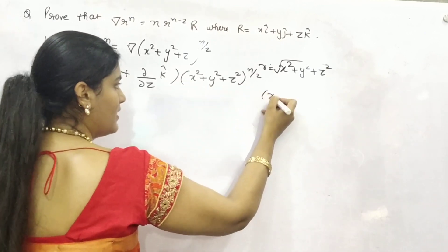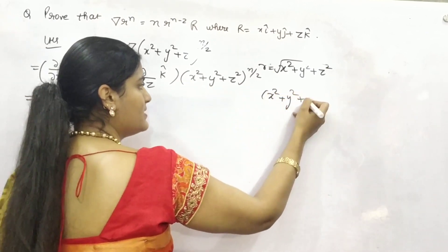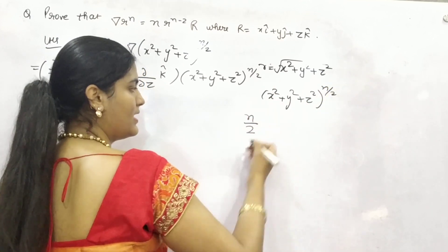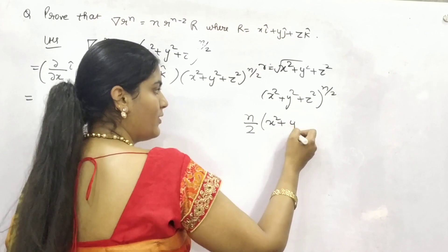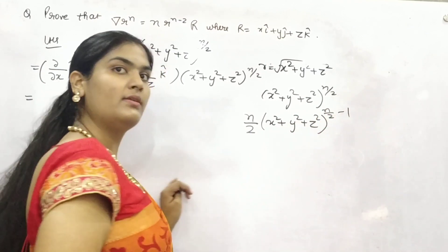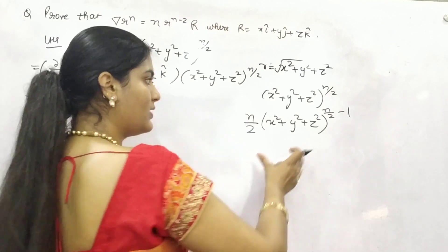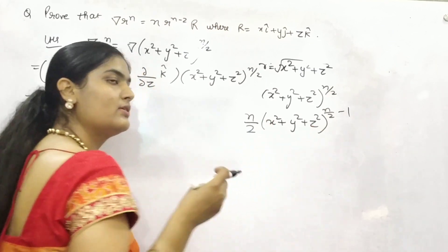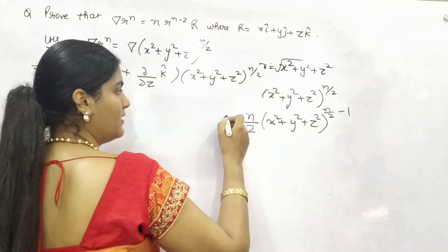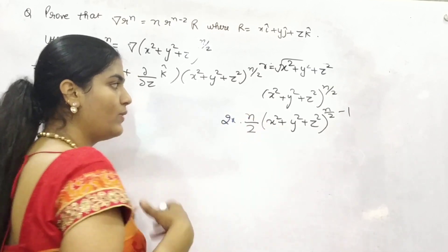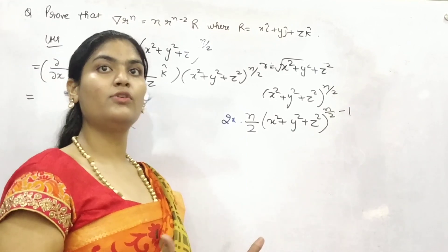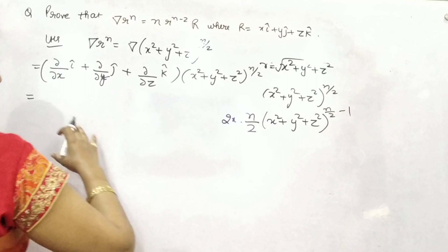You can see here, x square plus y square plus z square raised to power N by 2. You can take power as coefficient, subtract 1 from the power. So, N by 2 minus 1, and because your function already has got variable, so differentiate it as well. So, it will be 2x if you are doing with respect to x, 2y if you will do with respect to y, and 2z if you will do with respect to z.